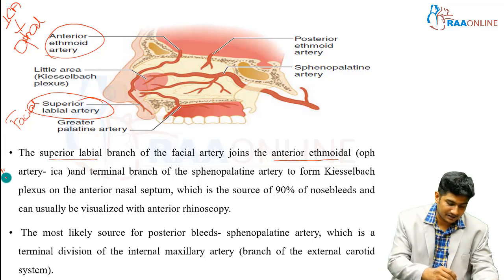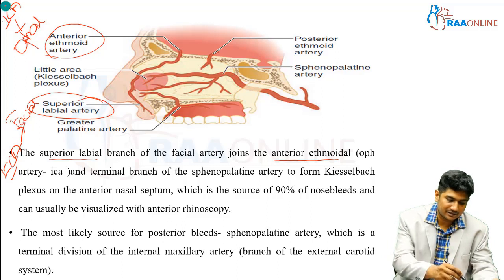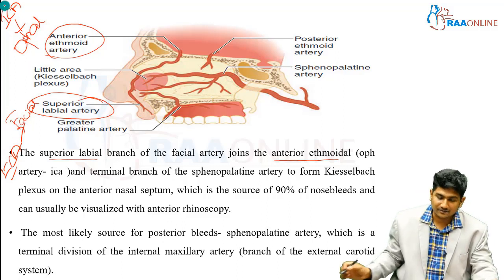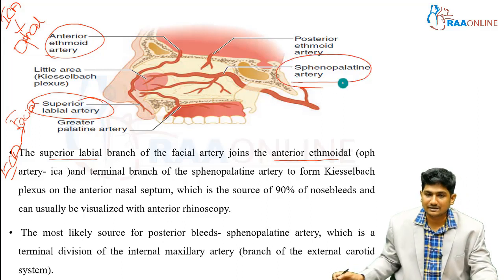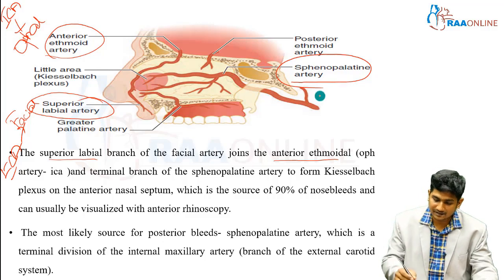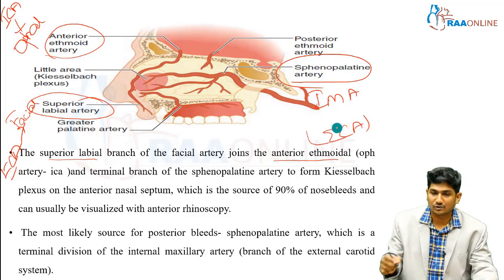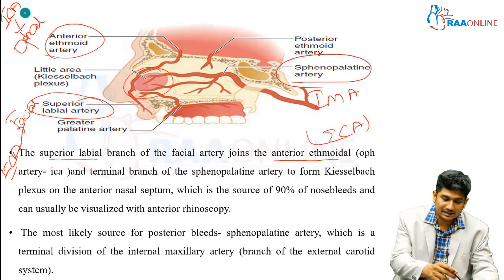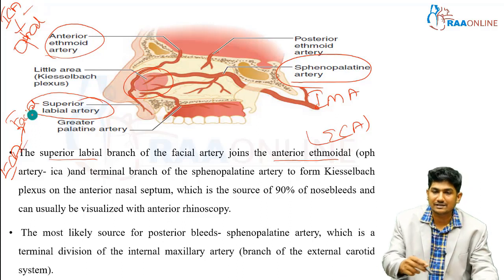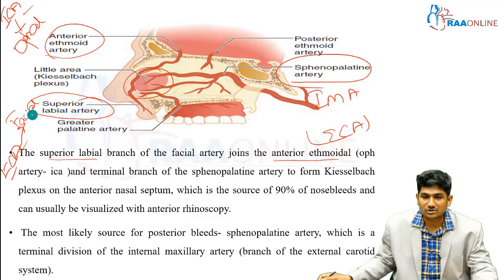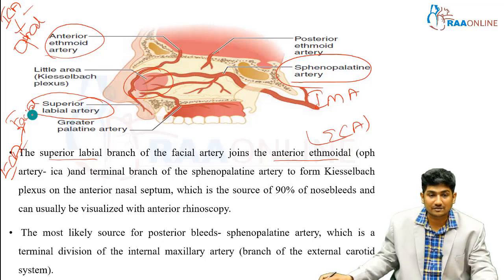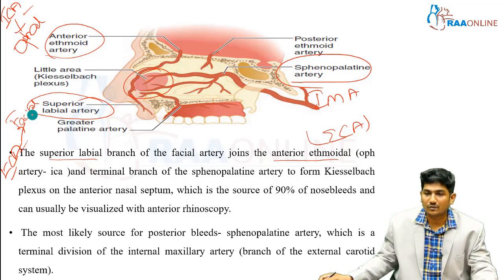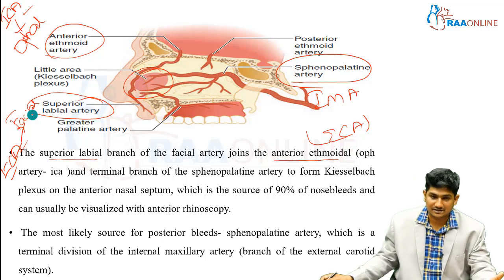So the external carotid and internal carotid arterial systems come together here. The terminal branch of the sphenopalatine artery comes from the internal maxillary artery, which is a branch of the external carotid system. This is one area where internal and external carotid arteries anastomose. The superior labial branch of the facial artery joins the anterior ethmoidal artery and the terminal sphenopalatine branch to form Kiesselbach's plexus on the anterior nasal septum, the source of 90% of nasal bleeds.